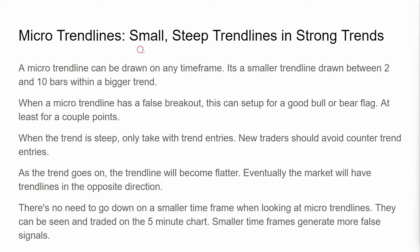Micro trend lines. Small steep trend lines and strong trends. A micro trend line can be drawn on any time frame — it's a smaller trend line drawn between 2 and 10 bars within a bigger trend. When a micro trend line has a false breakout, this can set up for a good bull or bear flag, at least for a couple of points. When the trend line is steep, only take with-trend entries. New traders should avoid counter-trend entries.